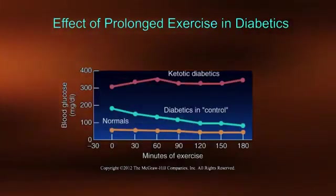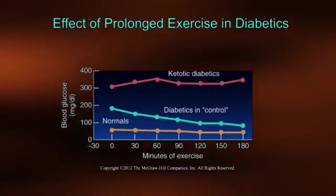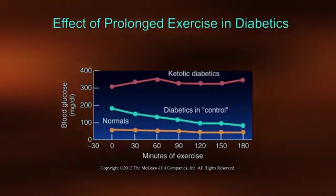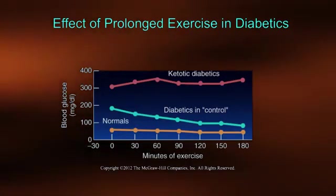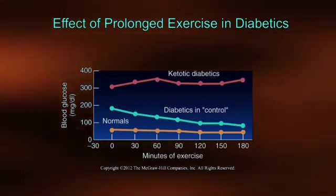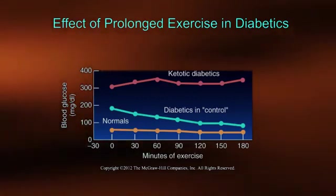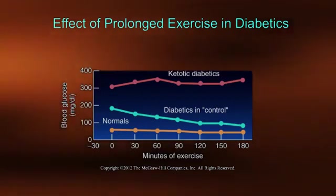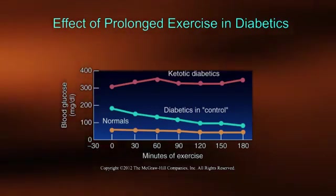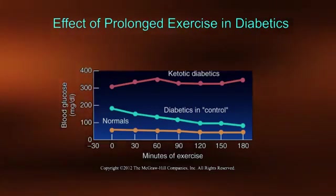Diabetic subjects monitoring their condition are still shown to have elevated resting blood glucose levels. However, please notice the significant blood glucose lowering effects from just one bout of prolonged exercise. Continued muscular contractions stimulate the extraction of glucose from the blood for fuel, thereby normalizing blood glucose levels.